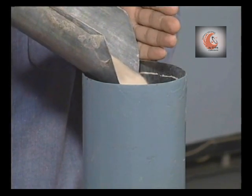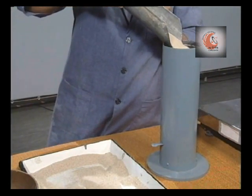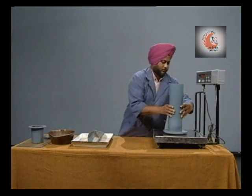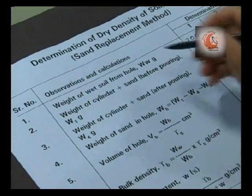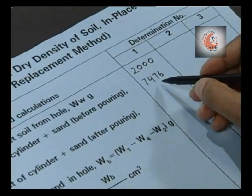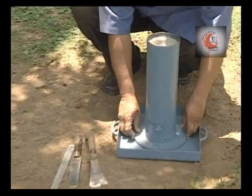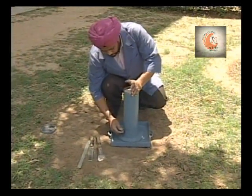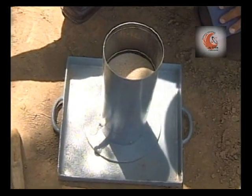Fill the sand pouring cylinder with standard sand to the weight as recorded earlier. Record the weight of the cylinder with sand before pouring, that is W1. This weight is the same as recorded earlier. Place the sand pouring cylinder concentrically over the excavated hole. Open the shutter and allow the sand to run out into the hole until no further movement of sand takes place in the cylinder.